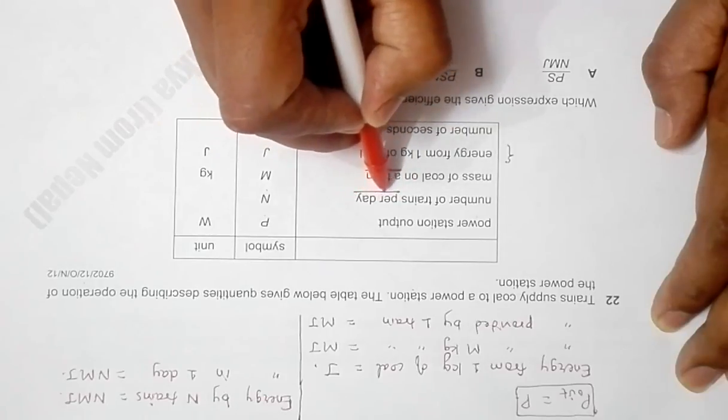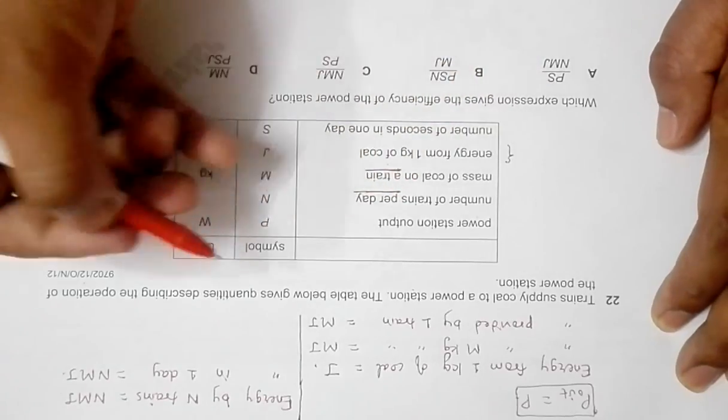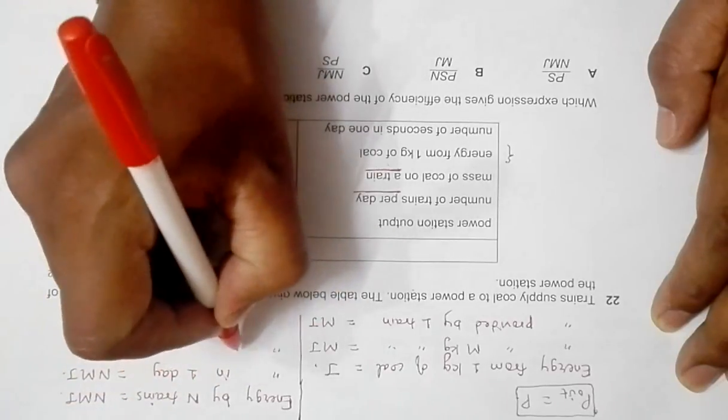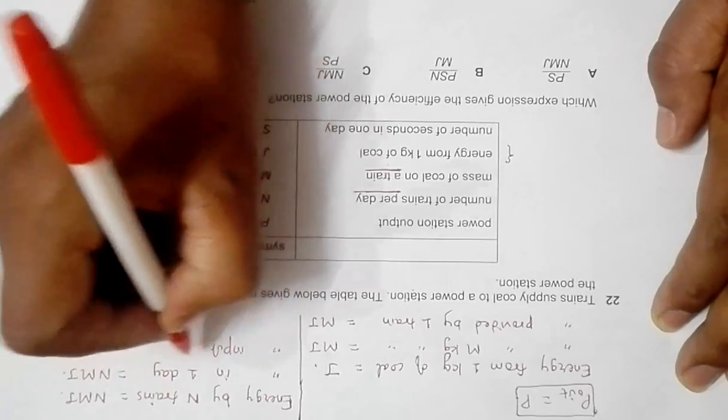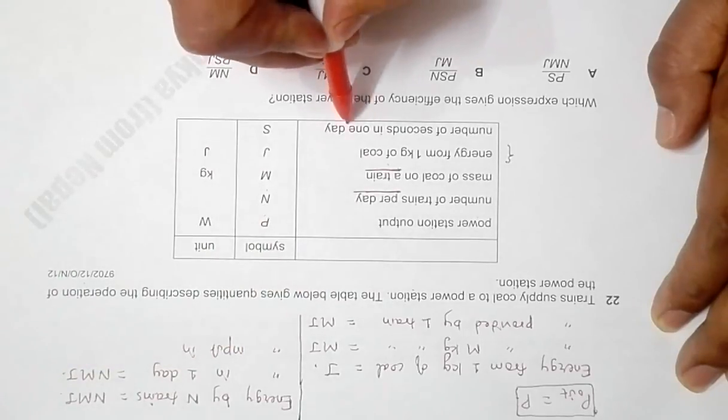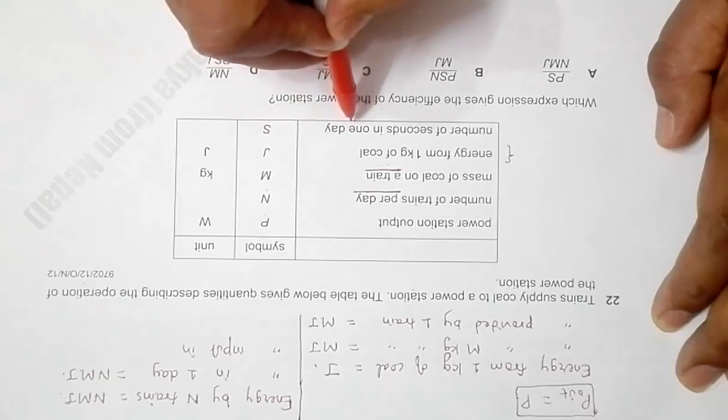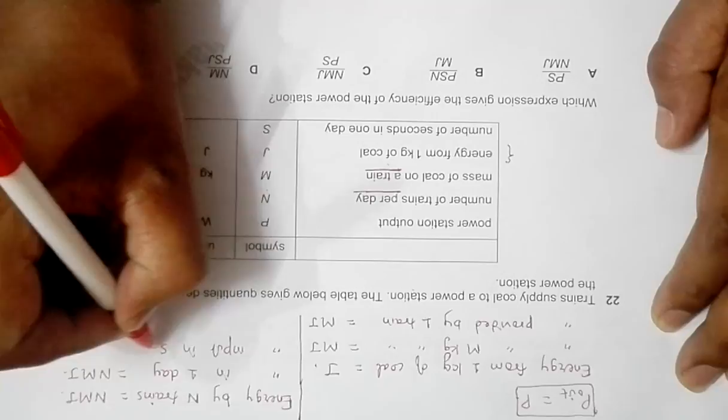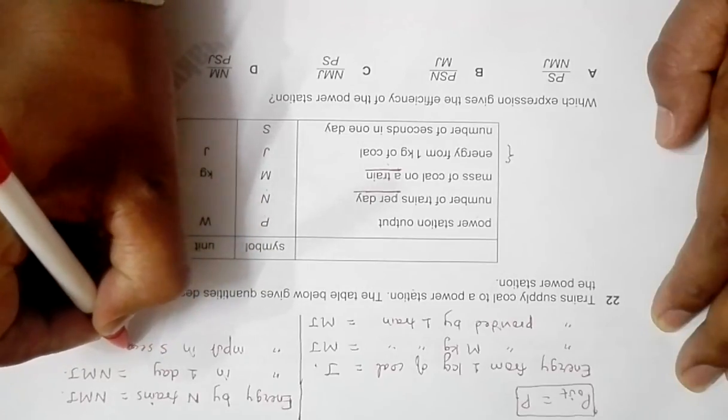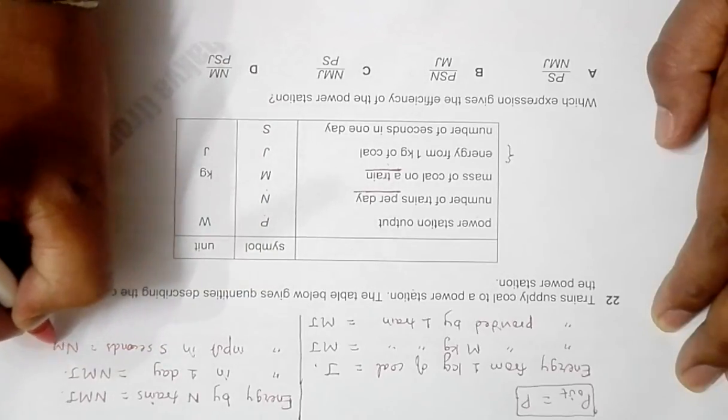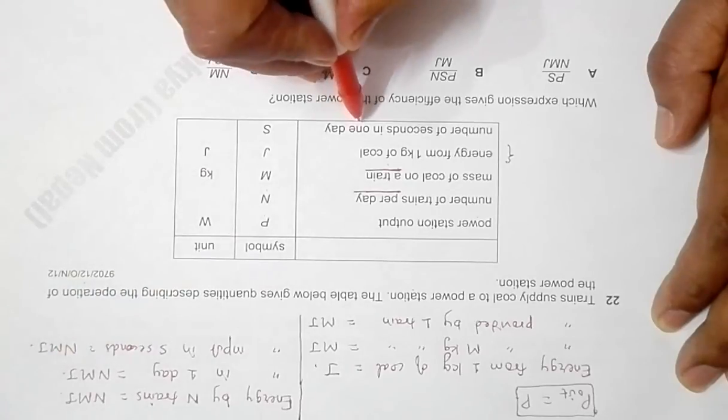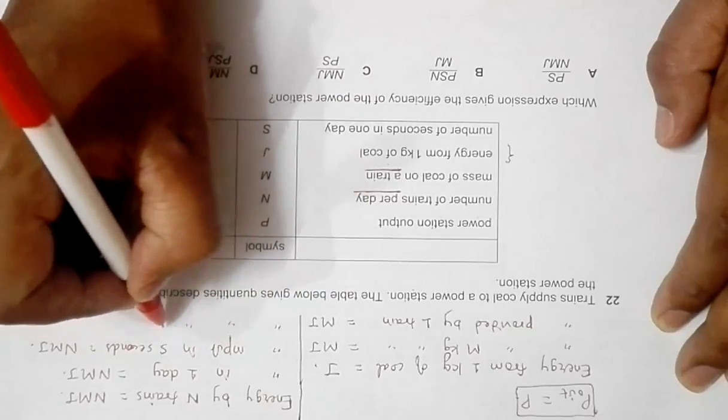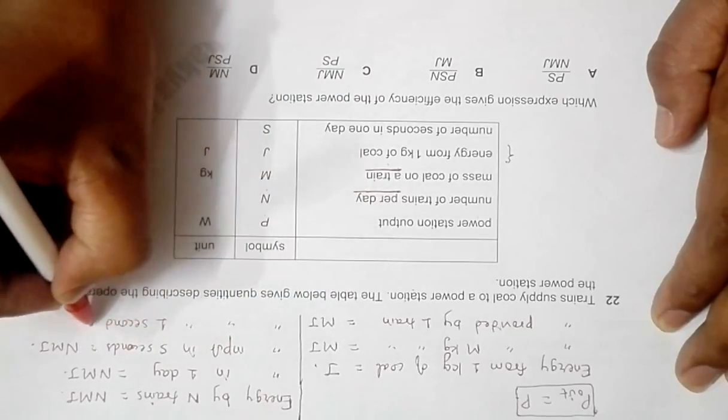So in one day there are n trains, so energy input in one day equals this much. That means energy input in one day - one day means s seconds. So in s seconds is equal to nmJ, because one day is equivalent to s seconds. That means energy input in one second is equal to...